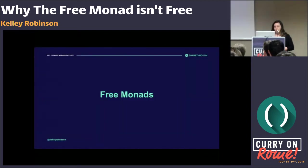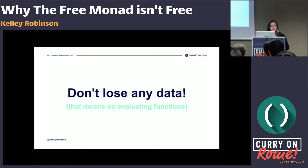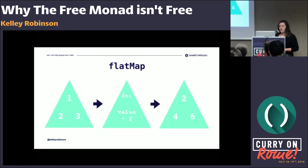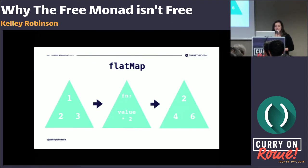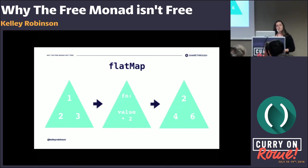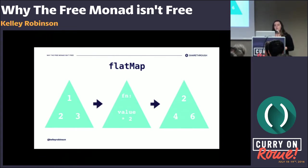For a monad to be free, we don't want to lose any data — that means no evaluating functions while we're chaining operations and flat mapping. Our previous triangle example fails the free test because we're evaluating that function and losing data in the result. How do we do this without losing data? We have to store the data and the functions as we chain operations together and effectively build up a syntax tree that we can evaluate at a later point.